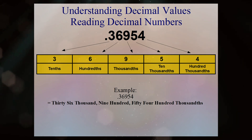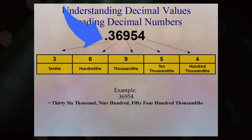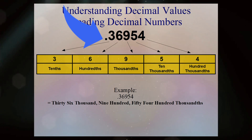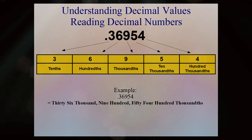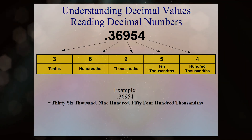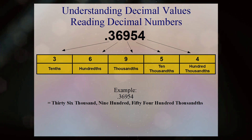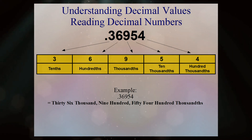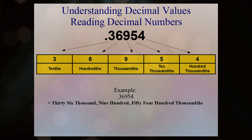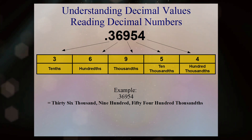We know this is a decimal number because it has the point and the number comes to the right of the dot. Now if you were to look at this number as a whole number and forget about the decimal, we can call this number thirty-six thousand nine hundred and fifty-four. You will still call this number thirty-six thousand nine hundred fifty-four — the trick is to know what to say after that.